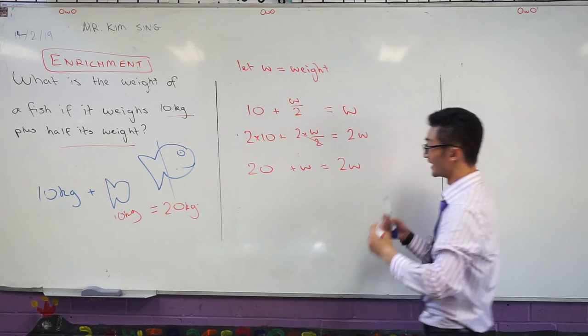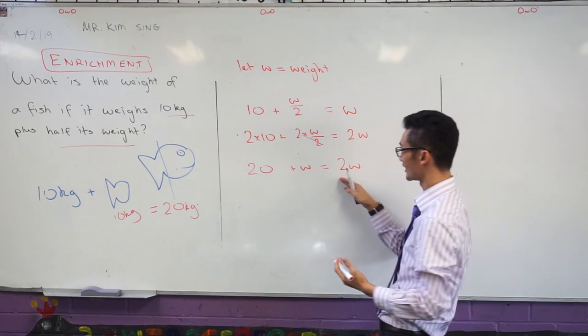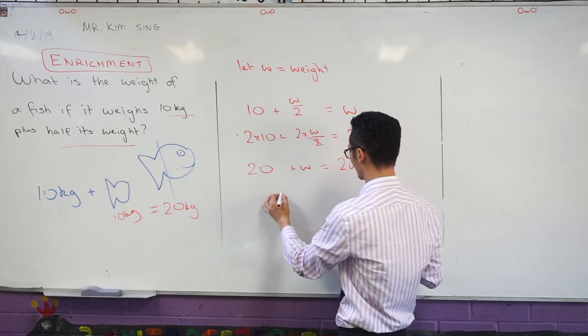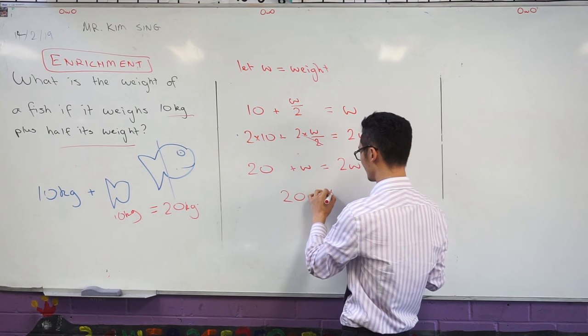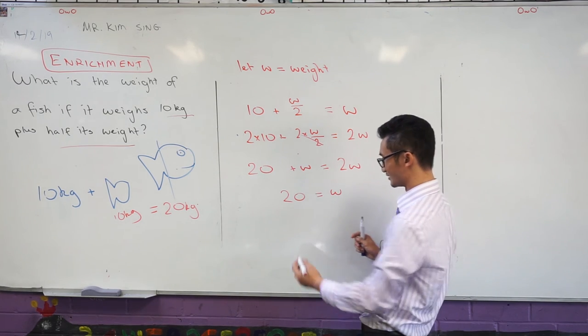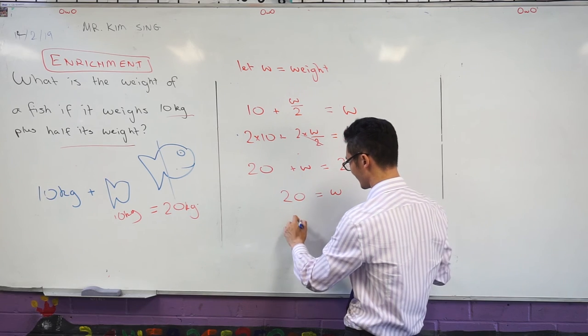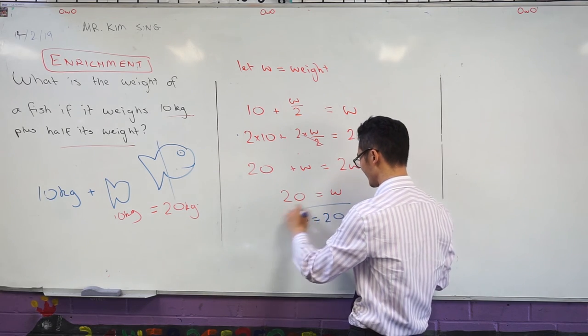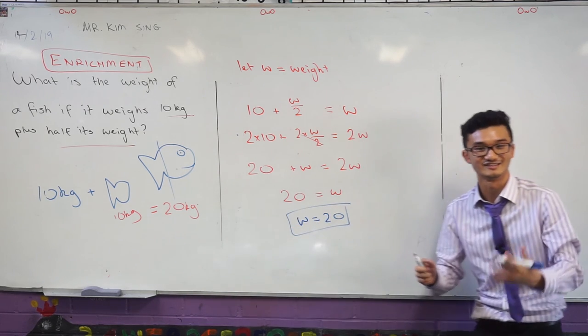And that would be equal to 2w. And then I can just solve it, I can subtract w from both sides, and I'll go with 20 is equal to w. So if I take away 1w from 2 lots of w, I'll just end up with 20 equals w, or we prefer to write it like this, w equals to 20. That's how you can get your answer of 20 there.